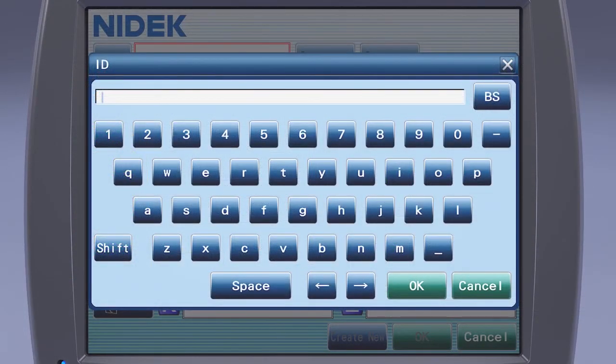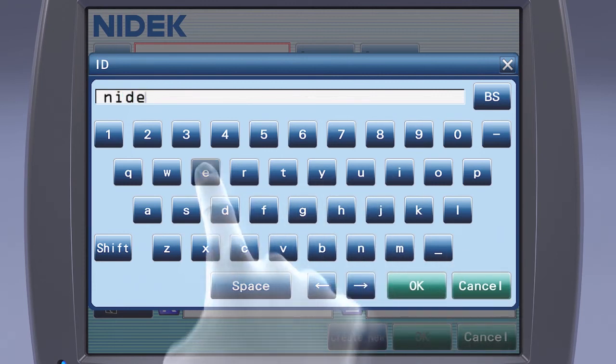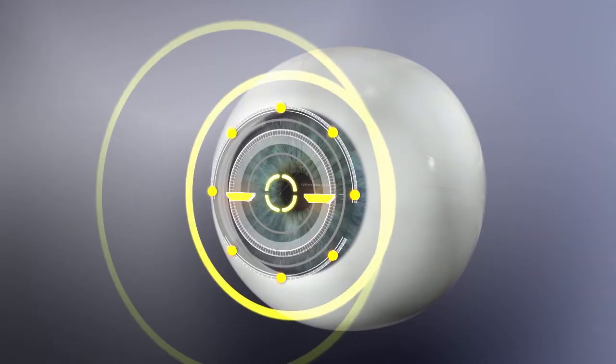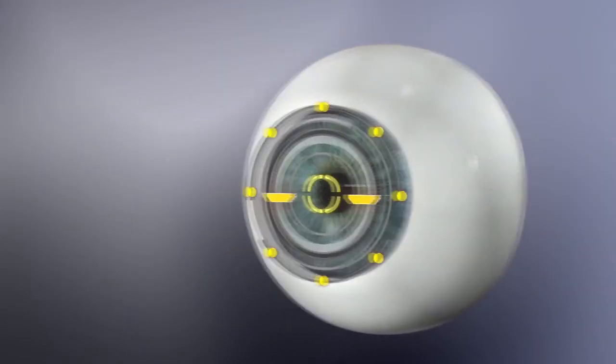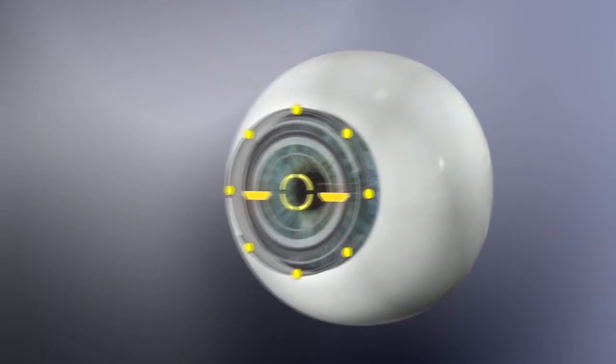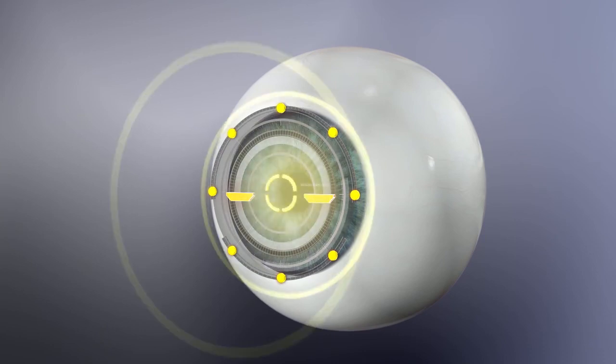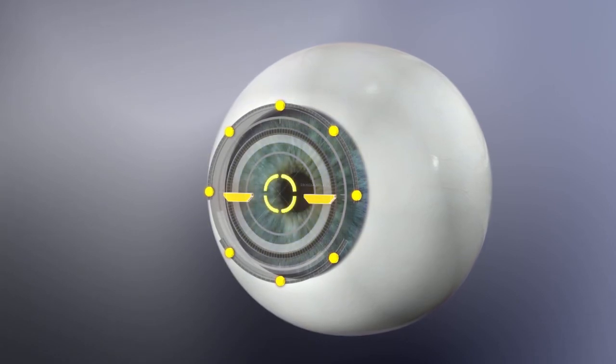Like many of NIDEC's diagnostic devices, the CEM530 includes an intuitive touchscreen and 3D auto-tracking to follow patient movements on the X, Y, and Z axes. The AutoShot feature automatically captures data as soon as correct alignment is achieved.